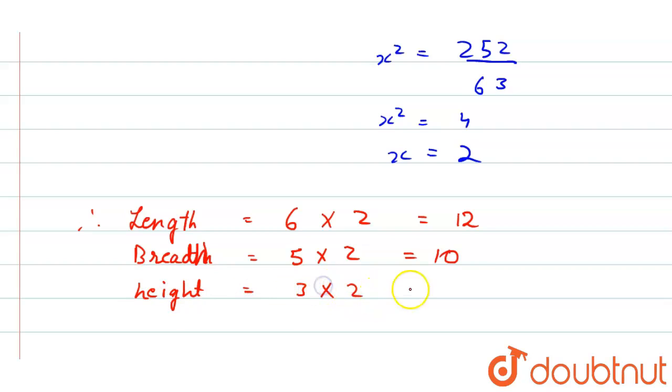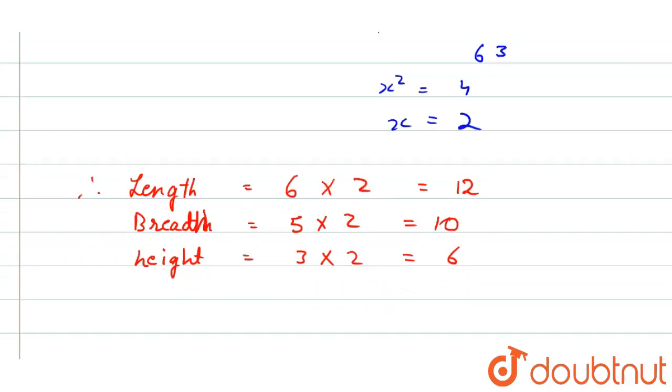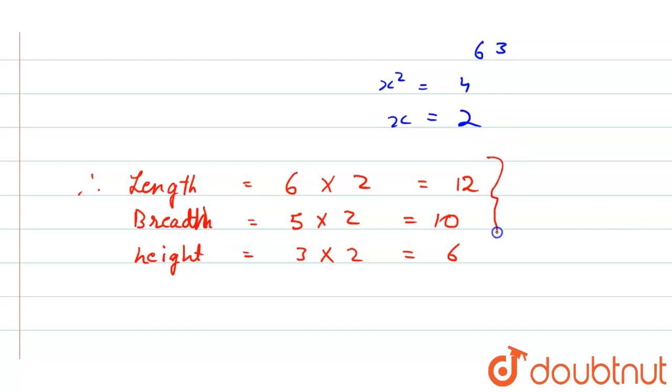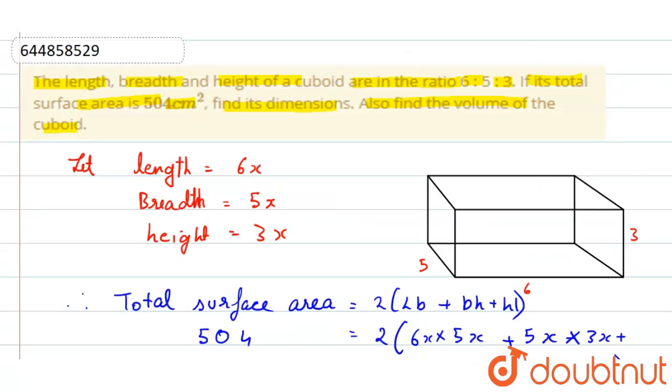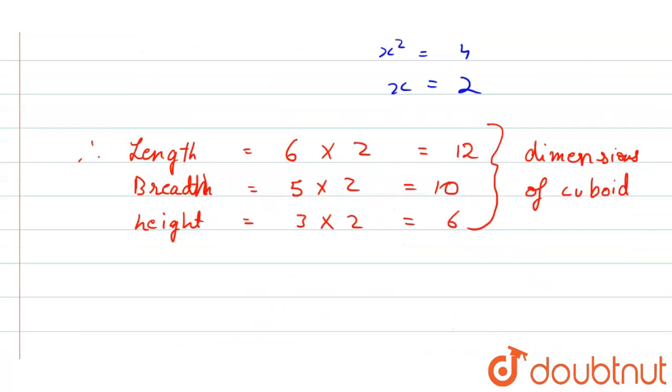3x, that is 3 into 2, that is 6. So these are the dimensions of cuboid. So now the question is asking us to find the volume. So we know the formula of volume, that is volume of cuboid